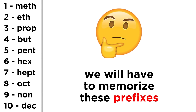At the absolute least, we must memorize these ten. Once you have these, they will be used over and over again, so they won't be hard to remember. Let's quickly go over them now: meth means 1, eth means 2, prop means 3, but means 4, pent means 5, hex means 6, hept means 7, oct means 8, non means 9, and dec means 10. These are prefixes, so these are the beginnings of molecule names.